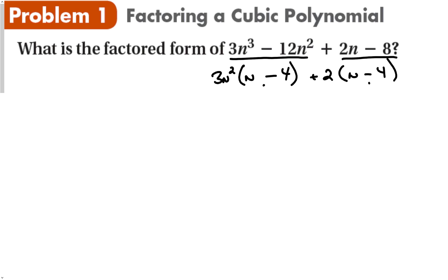And what we can do then is we can use the distributive property backwards, or we can factor both of those two terms out of the expression. And we're left with 3n squared plus 2 in parentheses times the n minus 4. And then this is my factored form of the expression. 3n squared plus 2 times n minus 4.